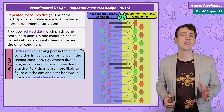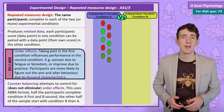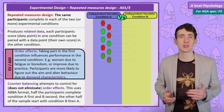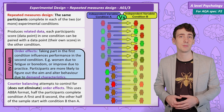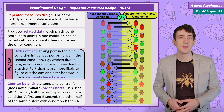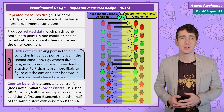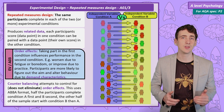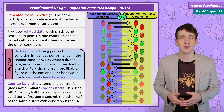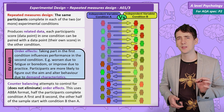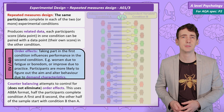We can try to control for order effects by counterbalancing — that's getting half the participants to do condition A then B, and the other half B then A. This will balance the influence of the order effects across the two conditions, so if tiredness or practice does affect performance, it should be the same across both conditions. Notice that counterbalancing controls order effects; it doesn't eliminate them.